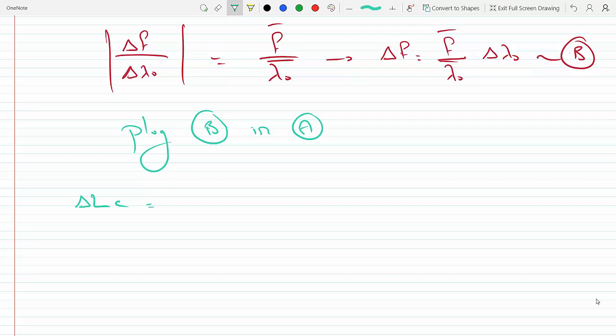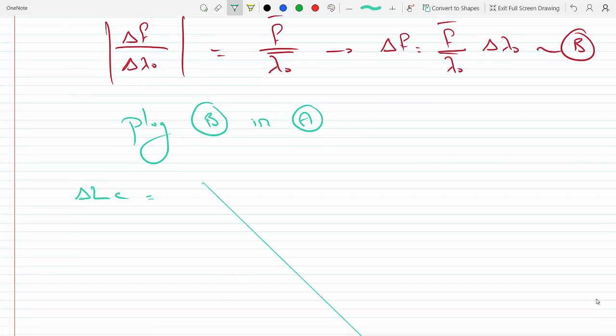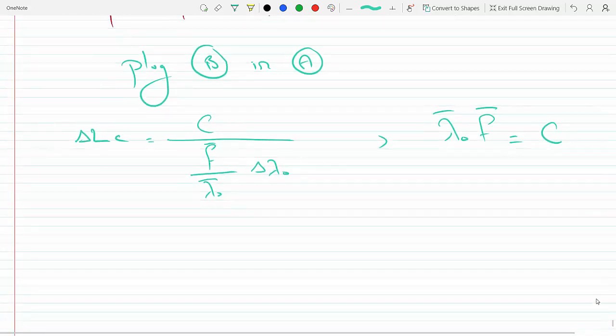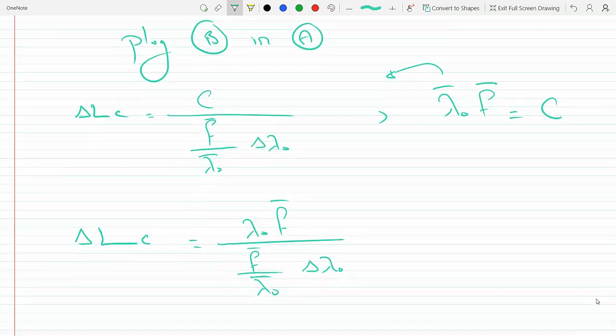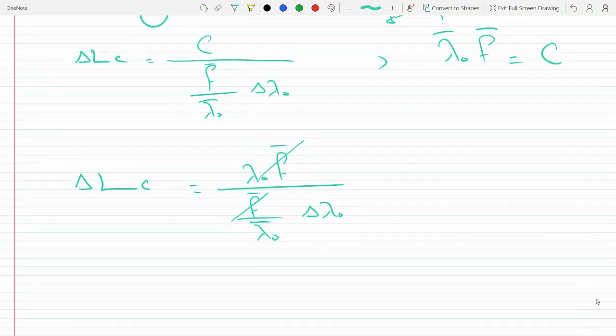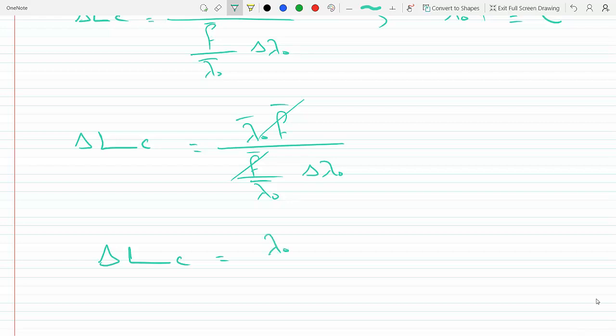And now I'm gonna take equation B and plug it in for A to find the coherent length. And so if I do that, plug B in A, we have Δlc coherent length equals C over that.